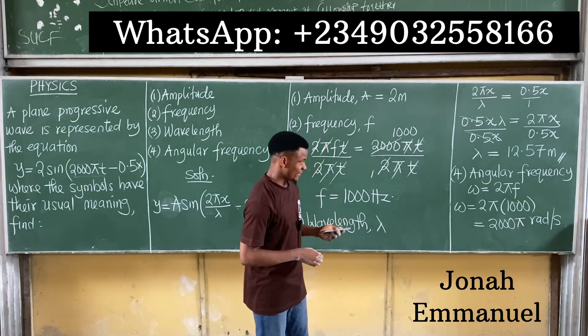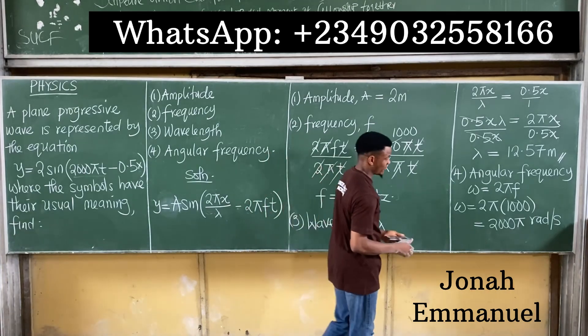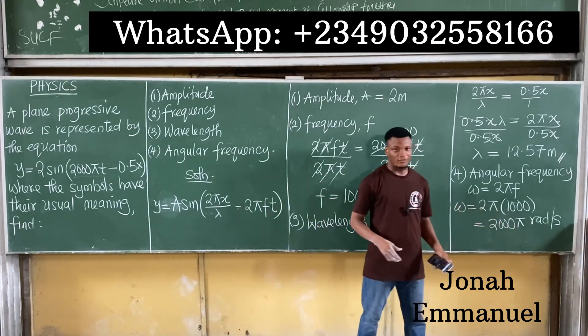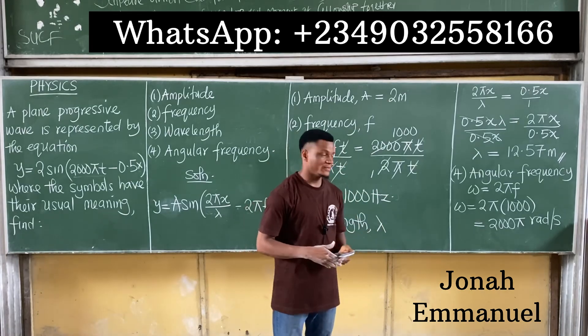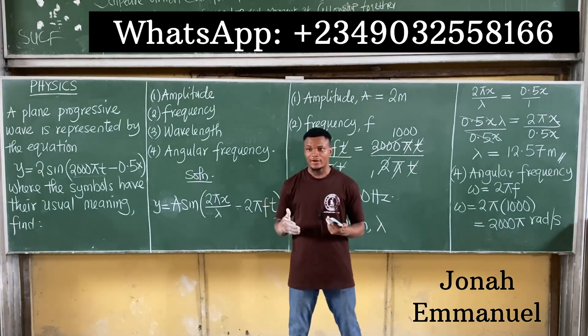In this case, it's not very necessary that we have to put 3.14 there. No, you can leave it as π. So I'm having 2000π rad per second.